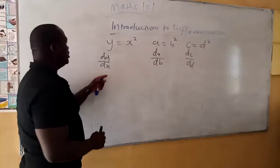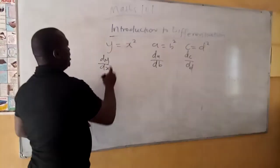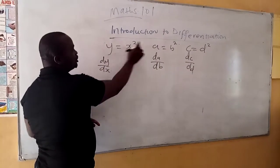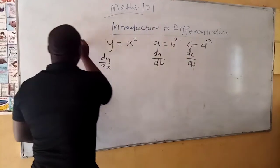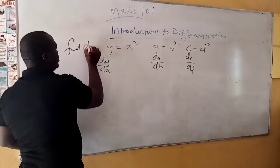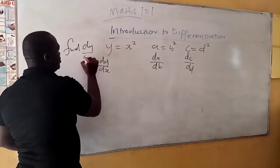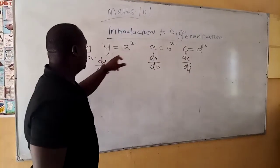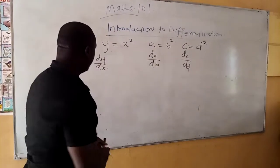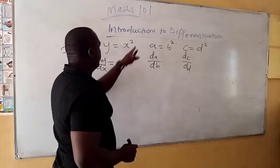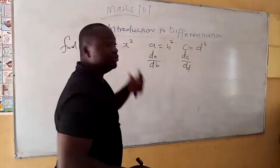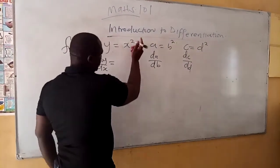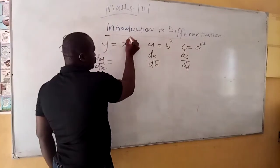So now, if I give you that y is equal to x squared and I say find dy over dx, that means you should differentiate this function. What you are going to do is use the simplest tool. First, look at the power.